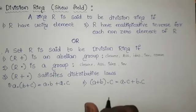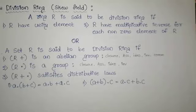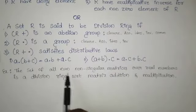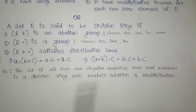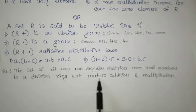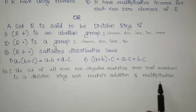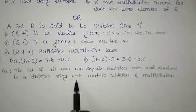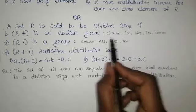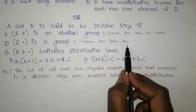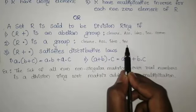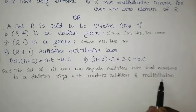This is our division ring concept. For example, the set of all n×n non-singular matrices over real numbers is a division ring with respect to addition and multiplication, because in matrix addition and matrix multiplication all these conditions hold good. That is why it is a division ring or a skew field.